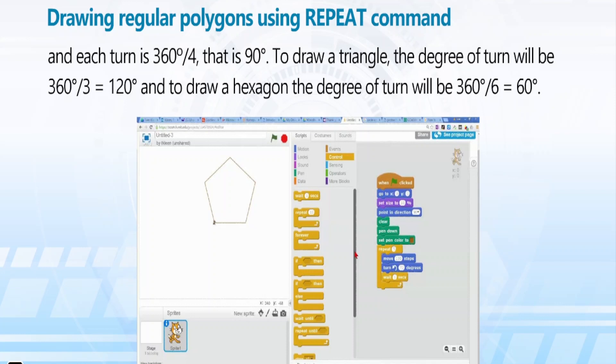To draw a triangle, the degree of turn will be 360 degrees by 3, equal to 120 degrees. And to draw a hexagon, the degree of turn will be 360 degrees by 6, equal to 60 degrees.